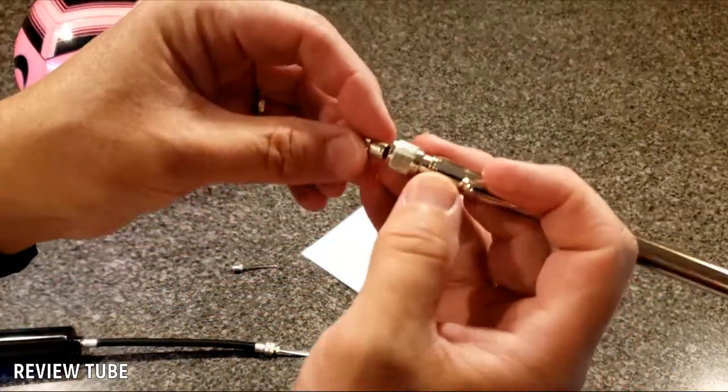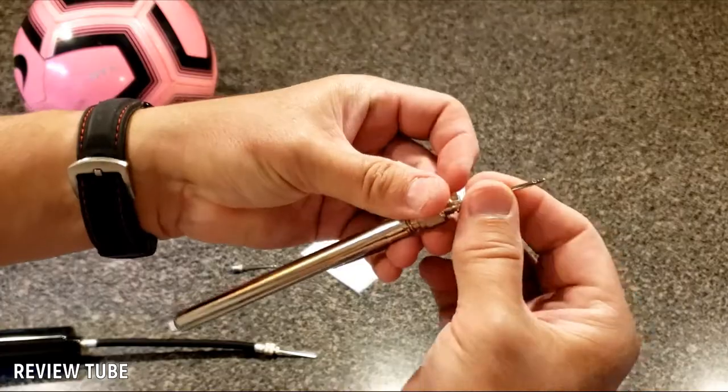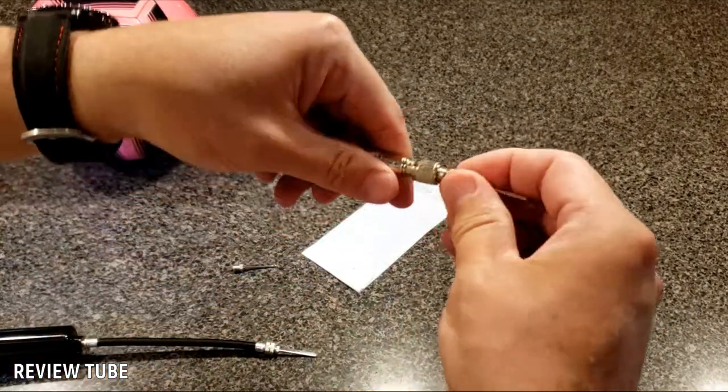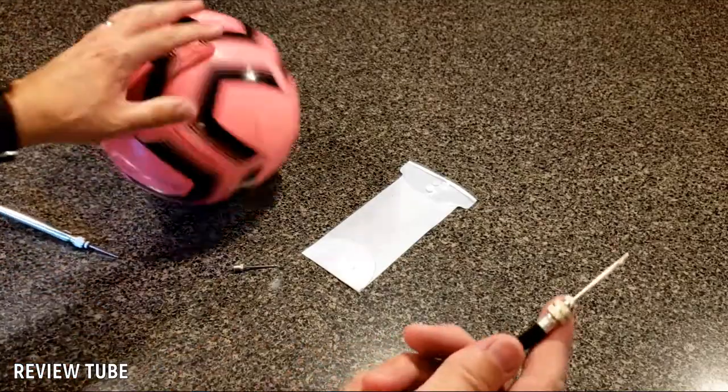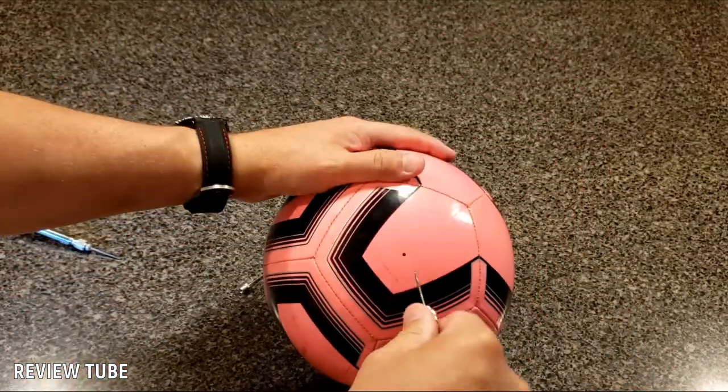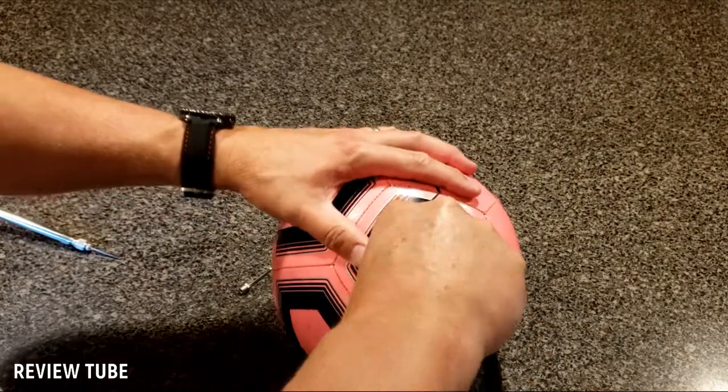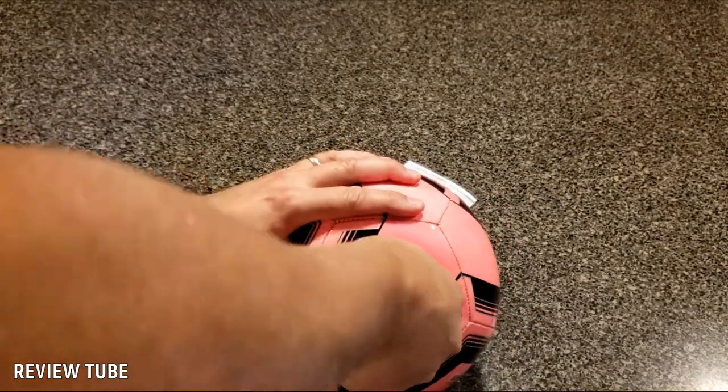We're also going to screw a needle into the gauge so we can check the pressure of the ball. Wet the needle a little bit and then push her in. I always twist. There we go.